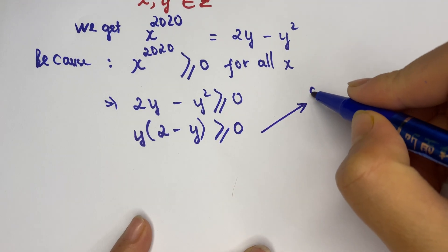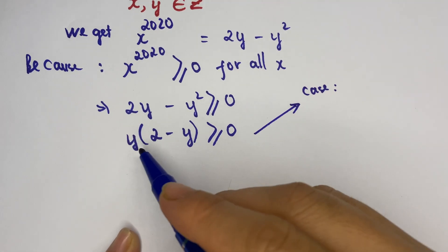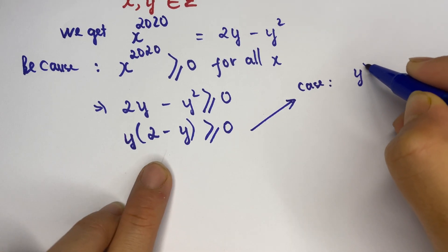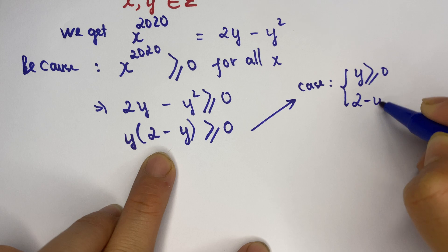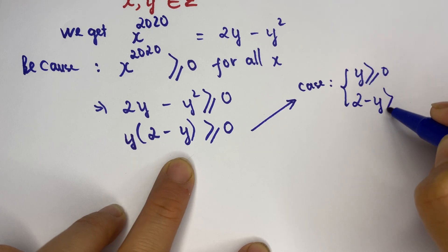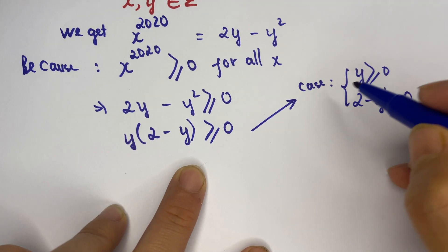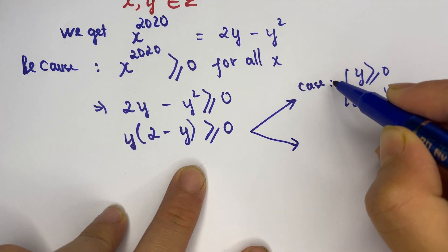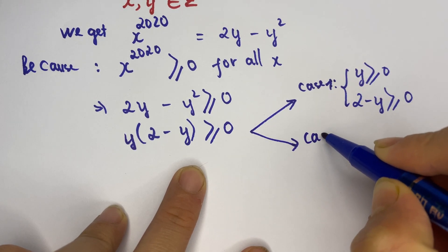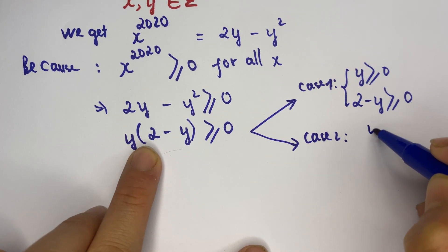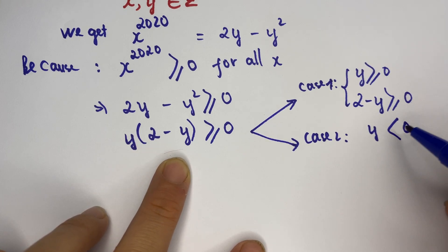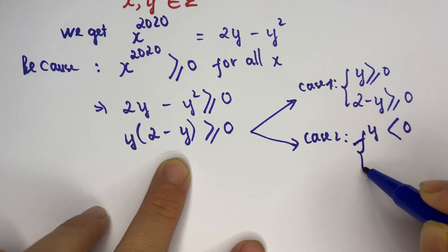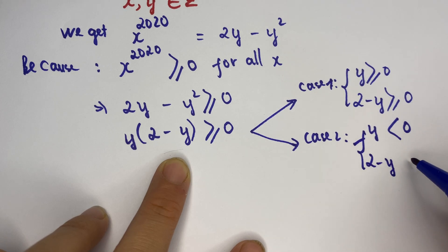We have two cases. For case number one: y is greater than or equal to zero, and 2 minus y is greater than or equal to zero. For case two: y is smaller than zero, or 2 minus y is smaller than zero.